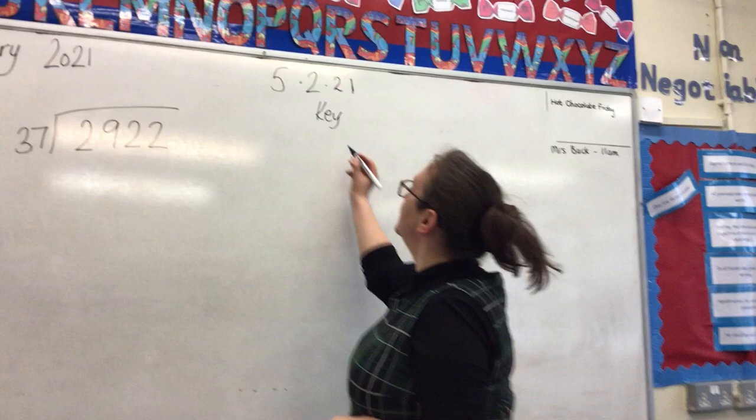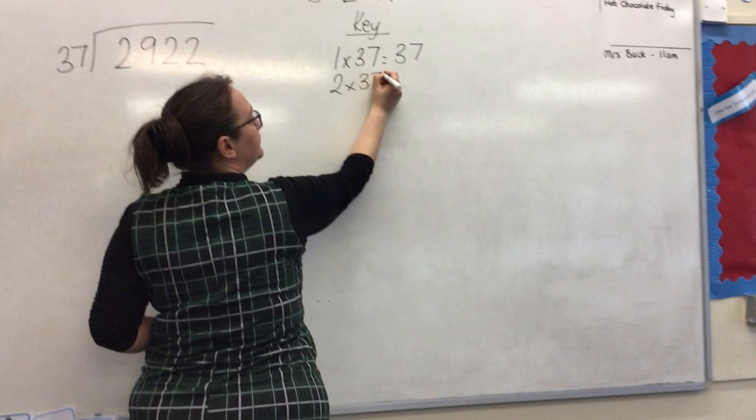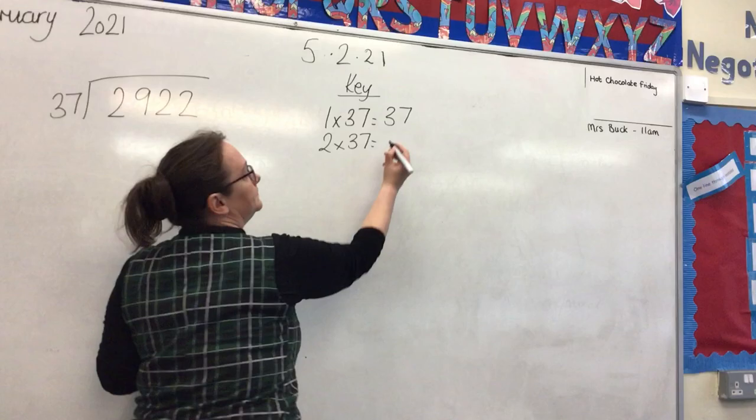You need to do your key. First, 1 times 37, which we know is 37. Then 2 times 37 - we're just doubling 37, so we get 74.